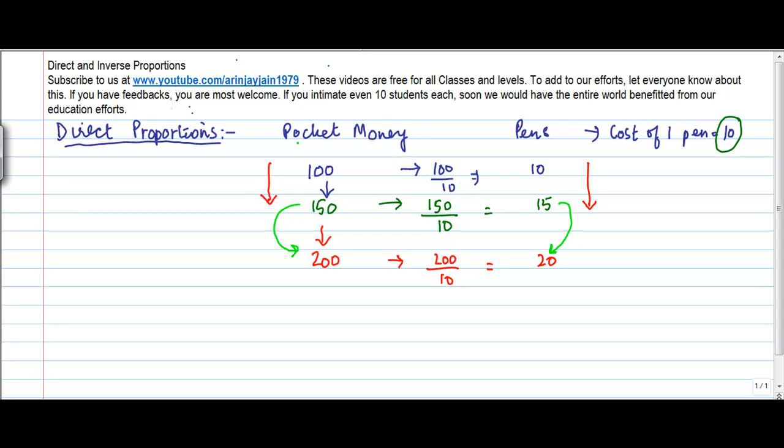Now, when one thing increases, let's say I denote the pocket money by X and the pens by Y. So, we say when X increases, Y also increases. So, what I noticed here was that X increased, Y also increased.